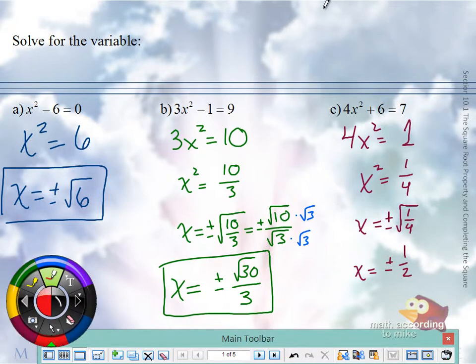So if you wanted to check, you'll put 1 half in for x. 1 half squared is 1/4 times 4 is 1. 1 plus 6 is 7. And also if you put a negative 1 half, you get the same answer.